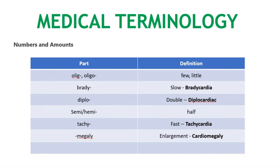Medical terminology related to numbers and counts: oligo means few or little; brady means slow — bradycardia means slow heart rate. Diplo means double — diplocardic organisms include mammals and birds, which have two separate circulatory paths, also called double circulation: one is pulmonary circulation and one is systemic circulation.